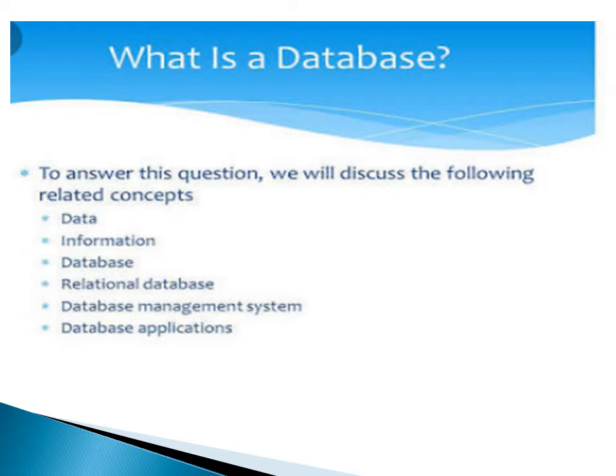In the first step, which is about data, we know that it is a collection of raw facts and figures. And when we apply any operation or any calculation on this data, then we can get the information. In other words, we can say that information is a processed form of data. By applying some process on data, we can get the information.